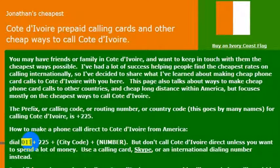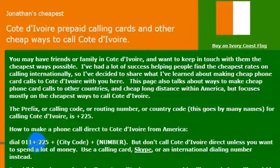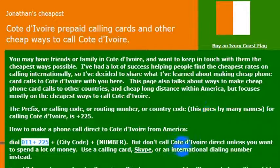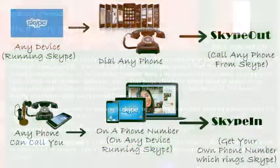From any phone that has international calling enabled — some cell phones don't — but if your phone has international calling enabled, then you would dial 011 and then the country code, which is 225. So 011-225 would get you to the Ivory Coast, and then you would dial the number you were calling.